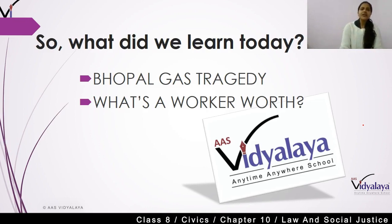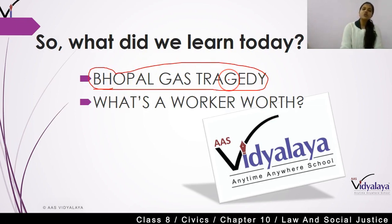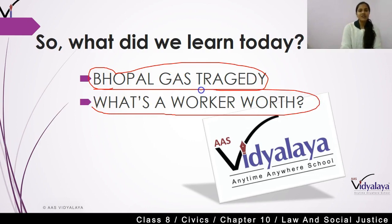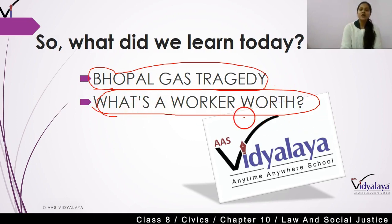In today's class, we have learned about the Bhopal gas tragedy that took place in December 1984, and how the poor working class families were most affected — how many people died from this tragedy. We also talked about a worker's worth, and understood why foreign companies set up in India, which is mainly for cheap labor. In our next class, we are going to continue with this topic and look at the condition of workers. That's all for today. Thank you very much. Have a nice day.